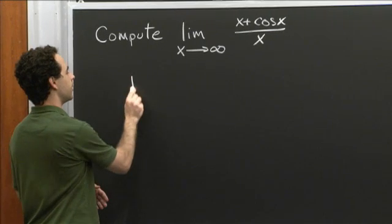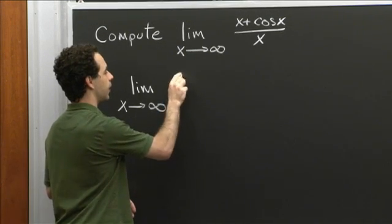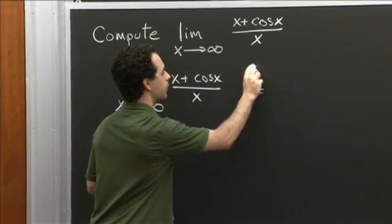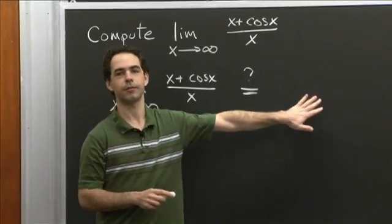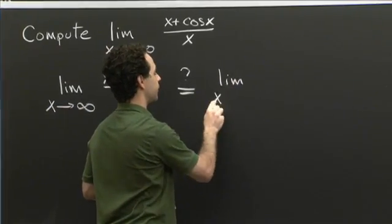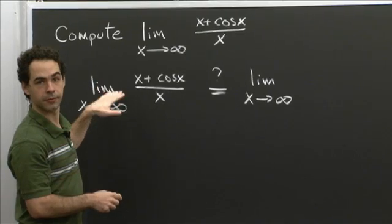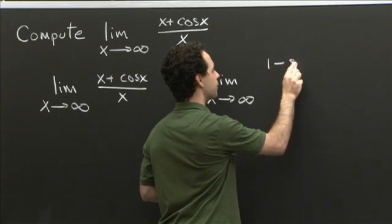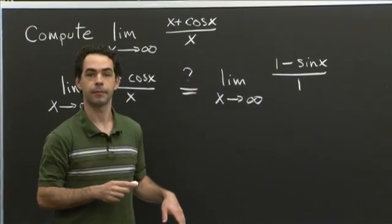So L'Hôpital's Rule says that the limit as x goes to infinity of x plus cosine x divided by x is equal — and I'm going to put a little question mark here — to the limit of the ratio of the derivatives, provided that the second limit exists. So that's the limit as x goes to infinity of 1 minus sine x over 1, since 1 minus sine x is the derivative of the top and 1 is the derivative of the bottom.